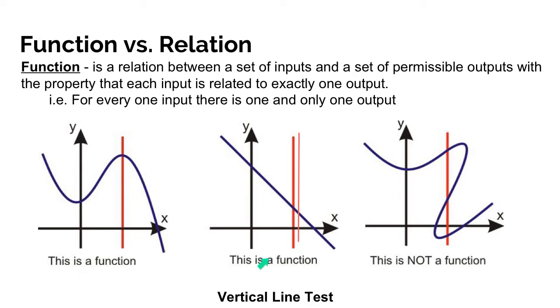The second example is also a function because as we pass this red line through it, it only touches it once. Now why we do a vertical line is because it represents inputs, right, because inputs are x values. So this is at a certain x value, this is at a certain x value, and this red line is at a certain x value. So as you pass this red line through it, over here it's still okay because it only touches that graph once.